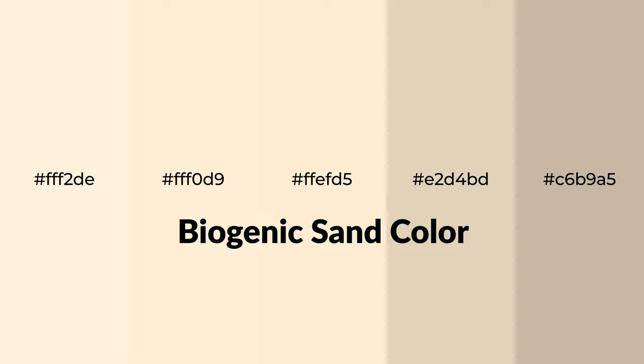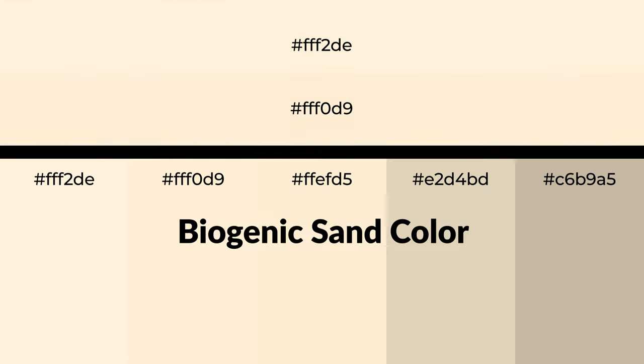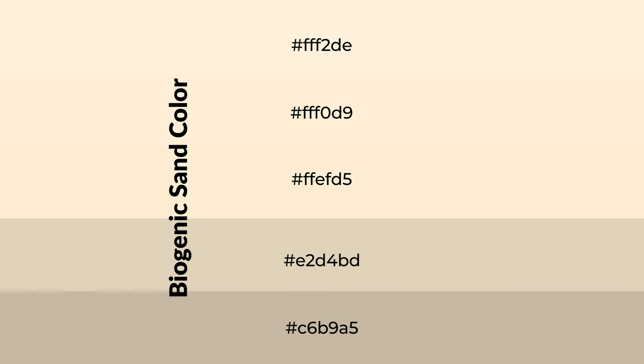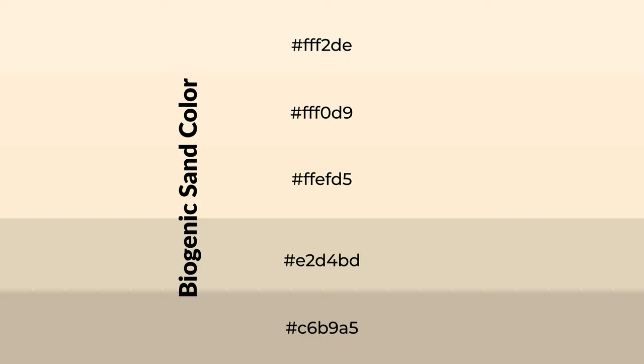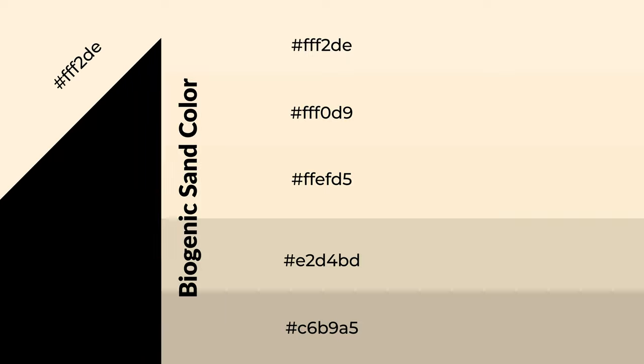Warm shades of biogenic sand color with yellow hue for your next project. To generate tints of a color, we add white to the color — tints create light and exquisite emotions. To generate shades of a color, we add black to the color, and it is used in patterns, 3D effects, and layers. Shades create depth and drama.